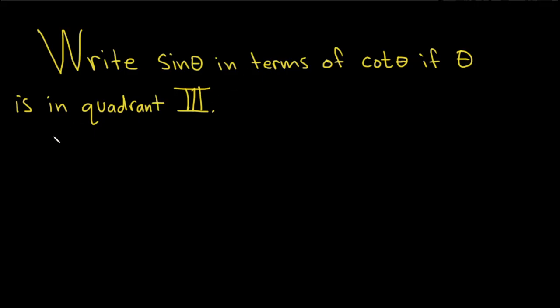The first thing we have to do is figure out what identity to use. If we use sin²θ + cos²θ = 1, we'll be able to solve for sine, but we won't have a cotangent. So instead, we can use 1 + cot²θ = csc²θ.